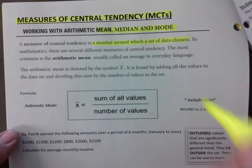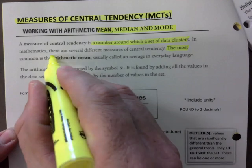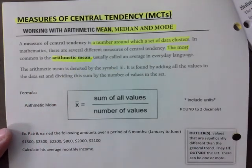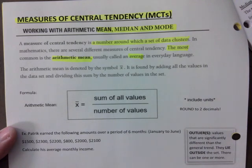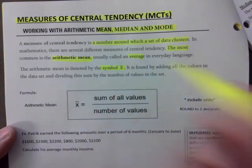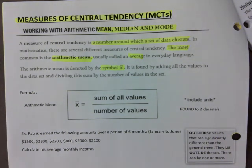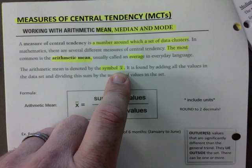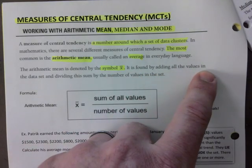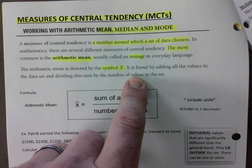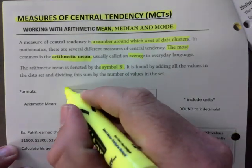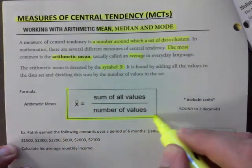The most common is the arithmetic mean, usually called the average in everyday language. The arithmetic mean is denoted by x-bar — that's the symbol for it. If you take this in college, x-bar means mean, that's the average. It is found by adding all the values and then dividing that sum by the number of values in the set. Here is the formula for your average.